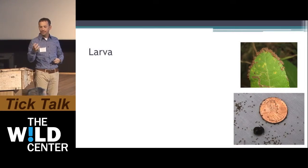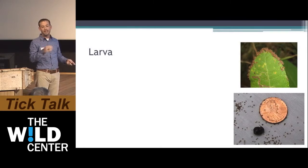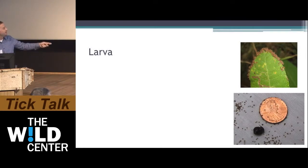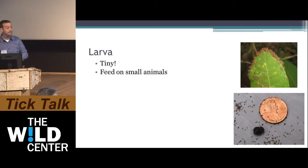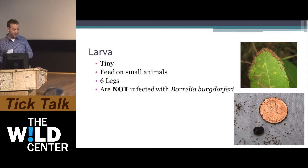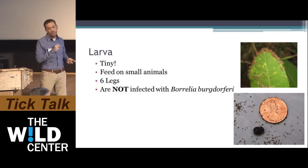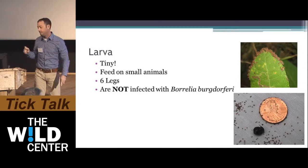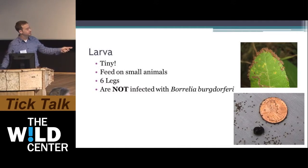The larvae are very small and they live in large bunches, waiting at the top of a leaf to latch onto the next host that passes by. They feed on small animals and have six legs, unlike spiders that have eight. Most importantly, and lucky for us, the larvae are never infected with Borrelia burgdorferi. Borrelia has to come from feeding on an infected animal.